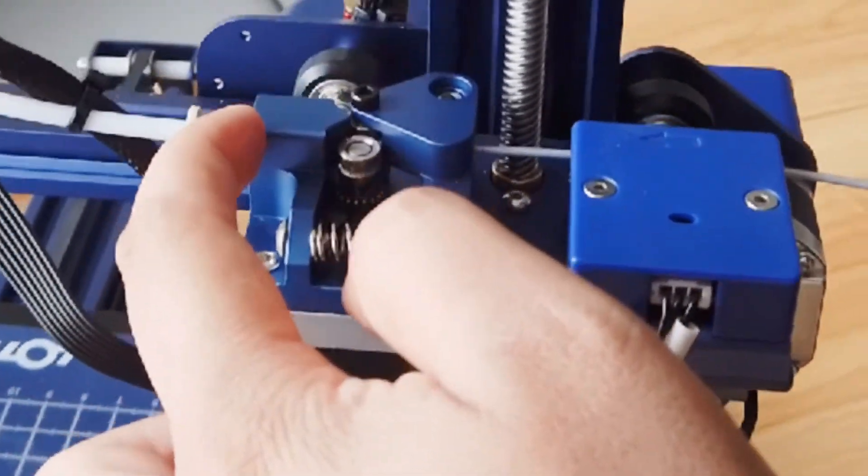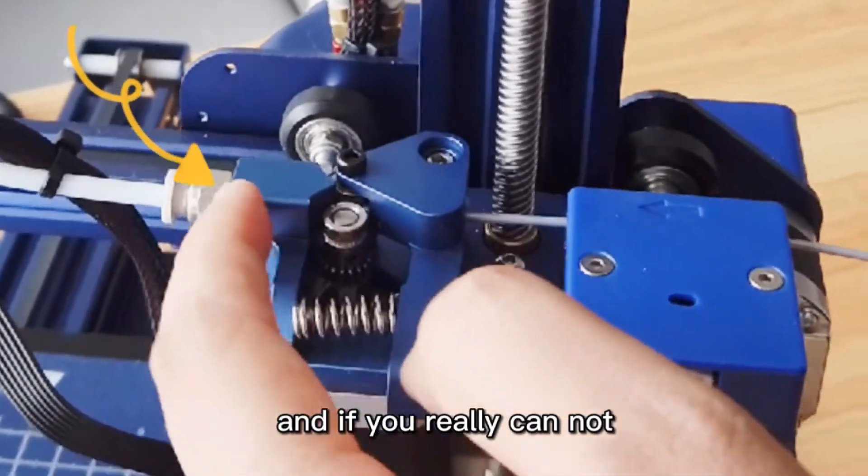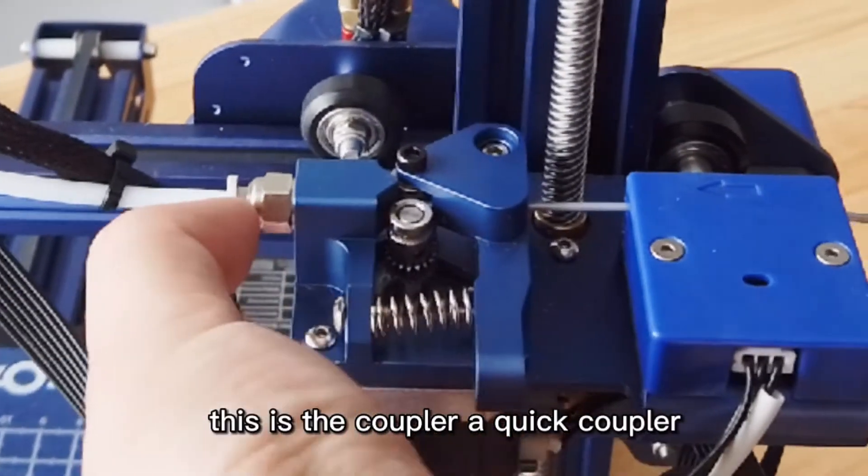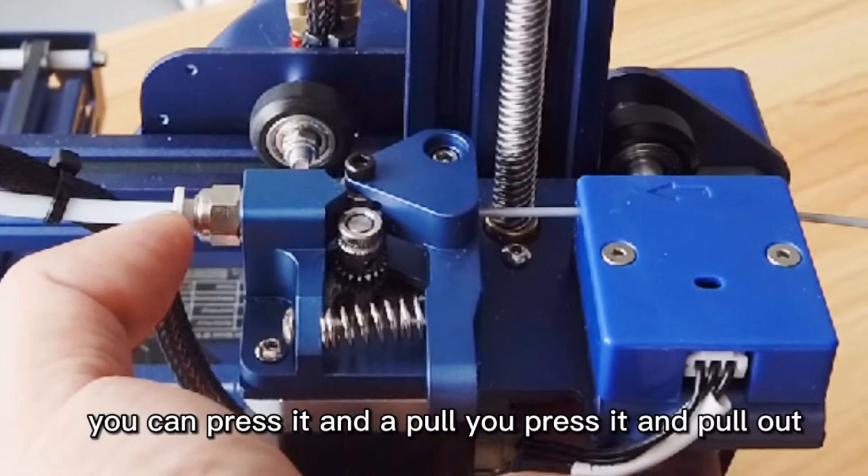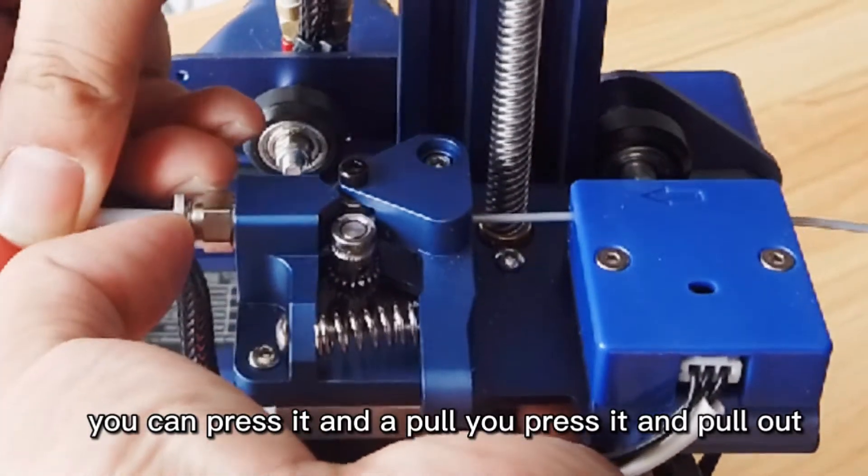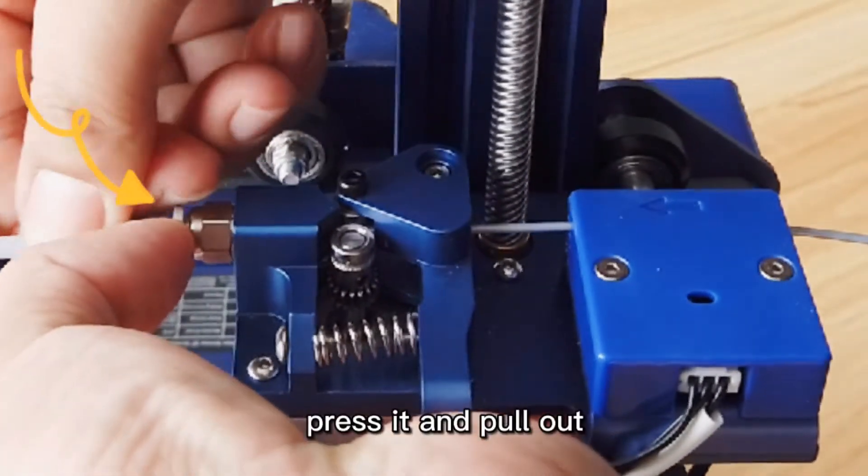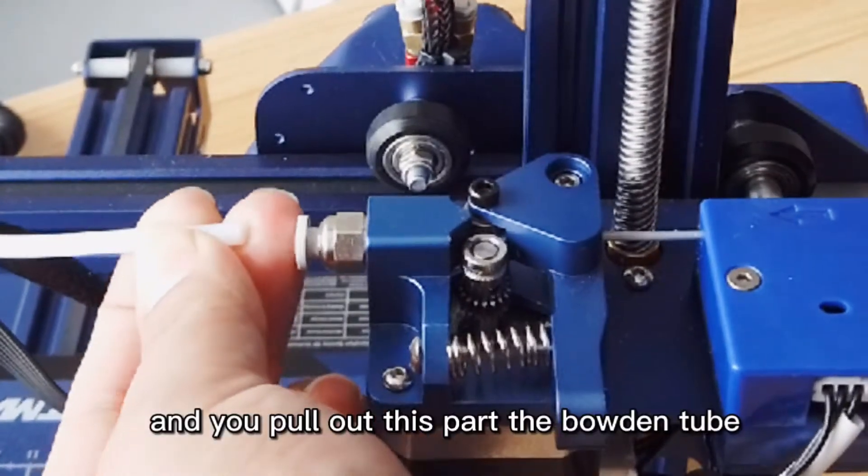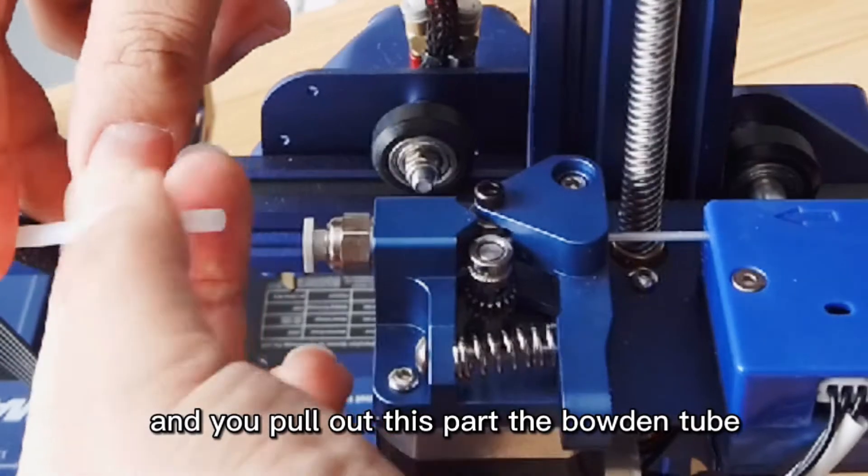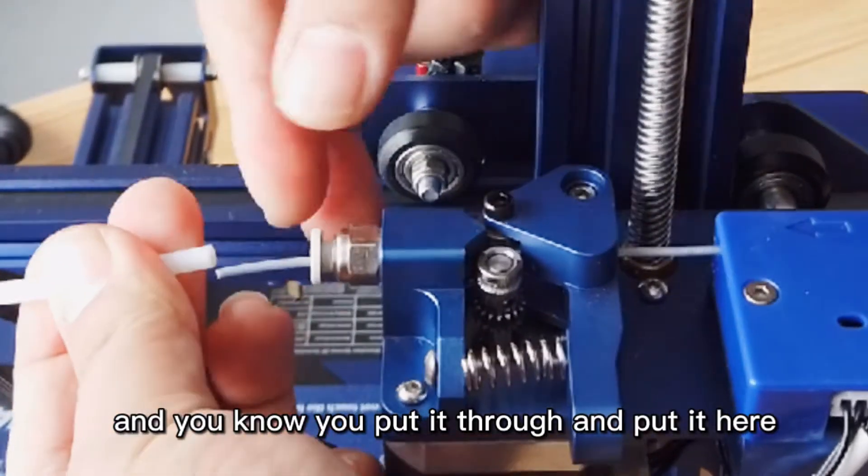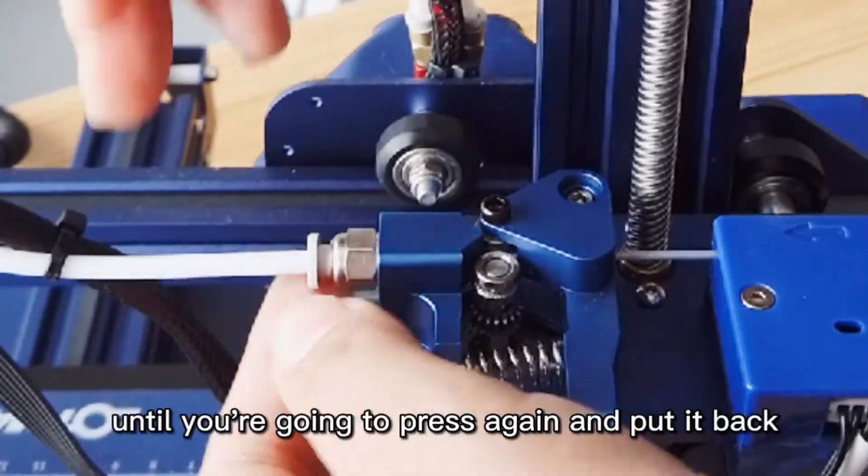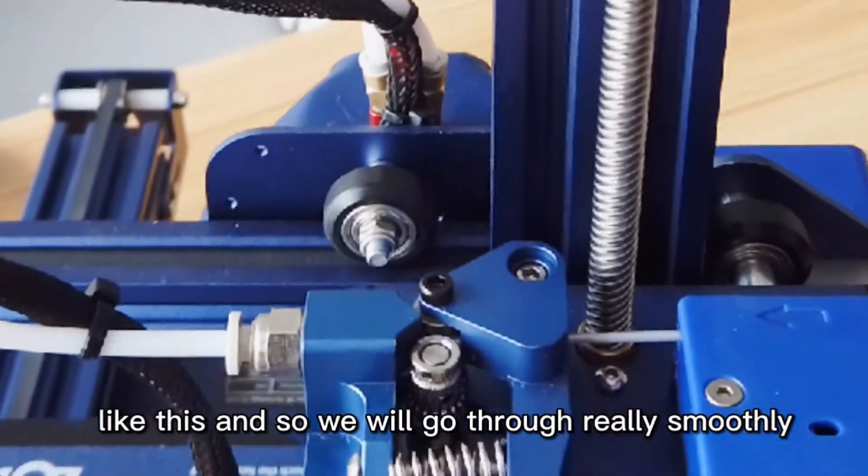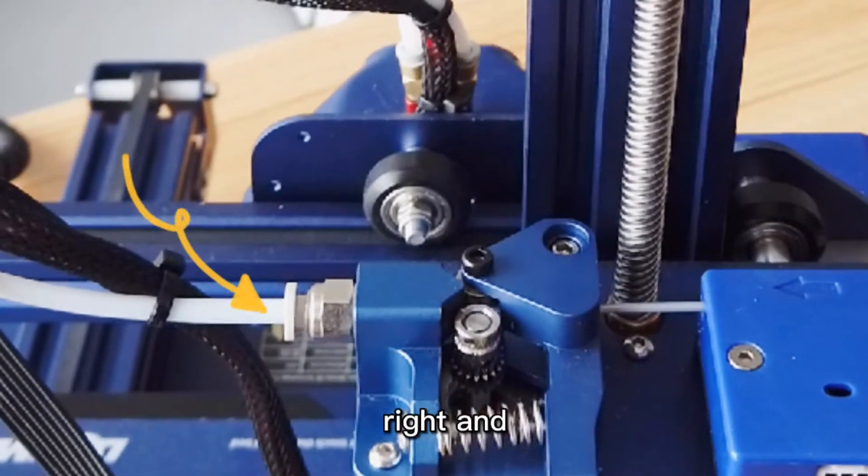It will get stuck here. And if you really cannot go through this part, this is the coupler, the quick coupler. You can press it and pull. Press it and pull out. And I mean if it is stuck here, you pull out this part, the bowden tube, and you put it through and put it here. And so you're going to press again and put it back like this. And so it goes through really smoothly, right?